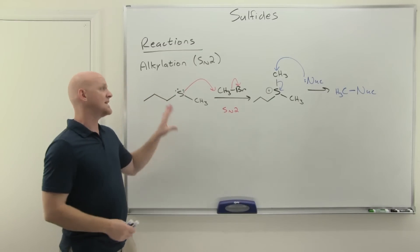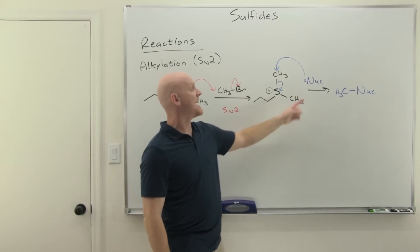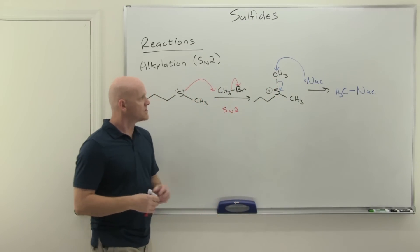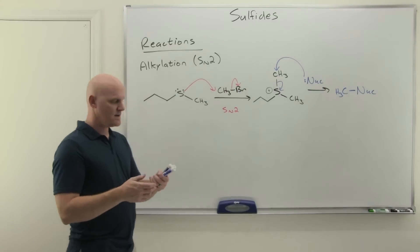And so we can look at this from two perspectives. We can alkylate the sulfur, but then we can also use the product of that reaction to alkylate something else as well. So that's our first useful reaction for sulfide. So let's look at the second here, oxidation.